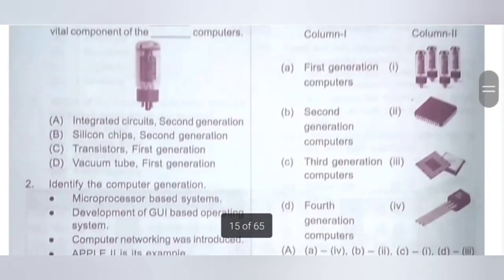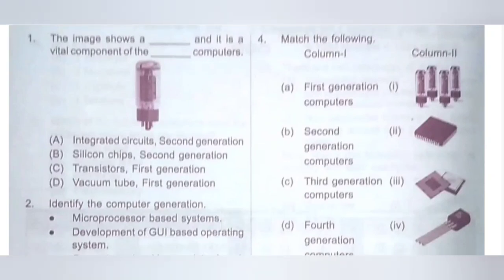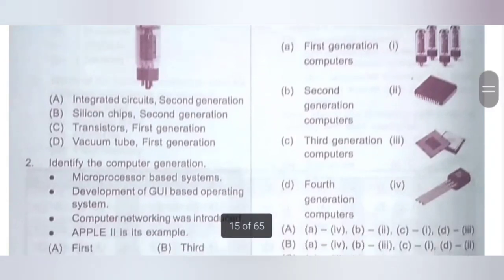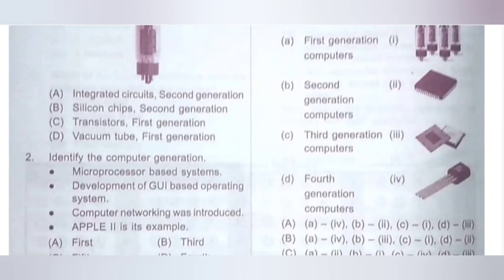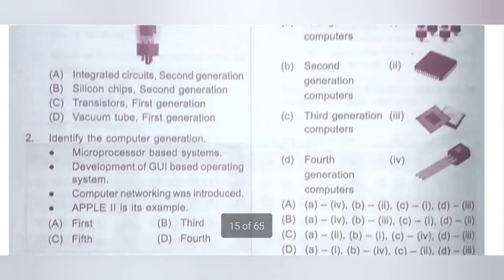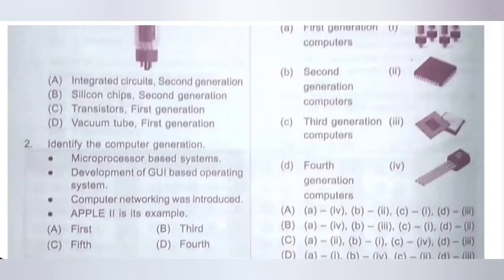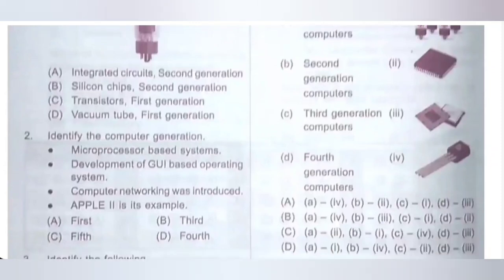4th question: Match the following — Column 1 to Column 2. 1st generation computers use vacuum tubes, so A1. 2nd generation computers use transistors, so B4. 3rd generation computers use integrated circuits, so C2. 4th generation computers use processors, so D3. The matching is A1, B4, C2, D3. Option D is the correct answer.